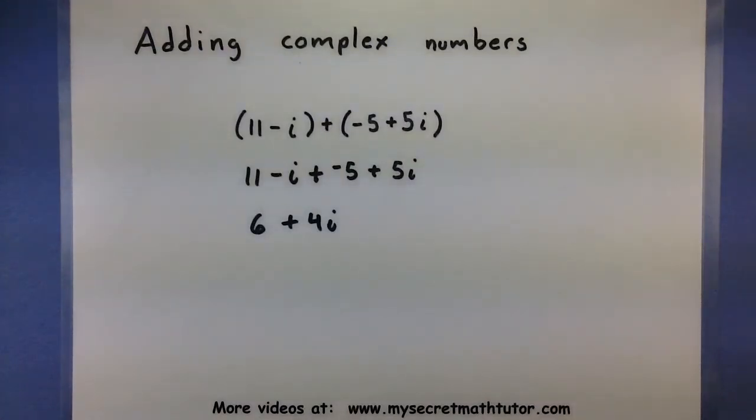So I've combined my numbers, I've combined my imaginary parts, and then I know this is done. So if you remember to combine your like terms, you can add complex numbers.